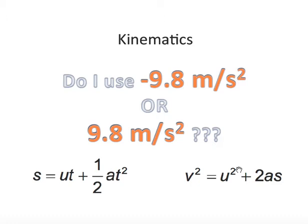Good morning! Today, often in physics, students have questions about whether to use negative 9.8 meters per second squared or 9.8 meters per second squared in questions involving the kinematic equations. So today our goal is to understand when we use negative 9.8 versus positive 9.8. Let's commence operations.